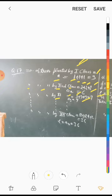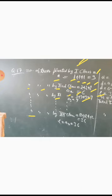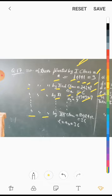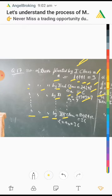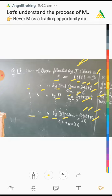Continuing this pattern up to Class 12: Class 12 plants 12+12+12 = 36 trees, which is the last term. So we need to find the total number of trees planted from Class 1 to Class 12.